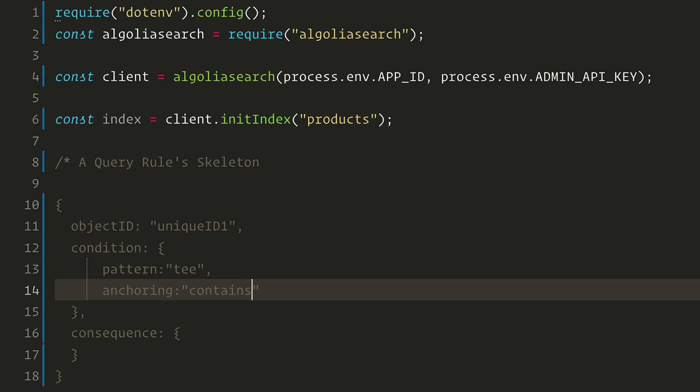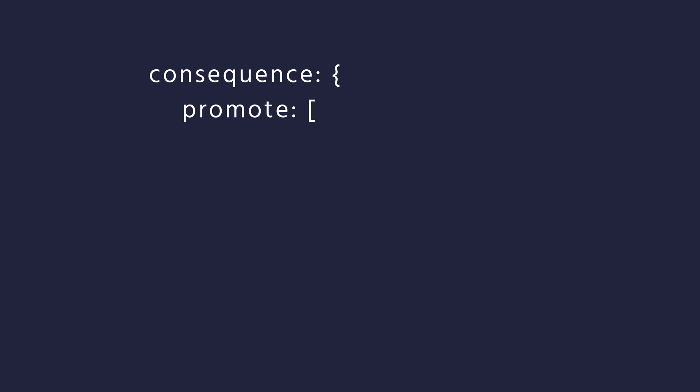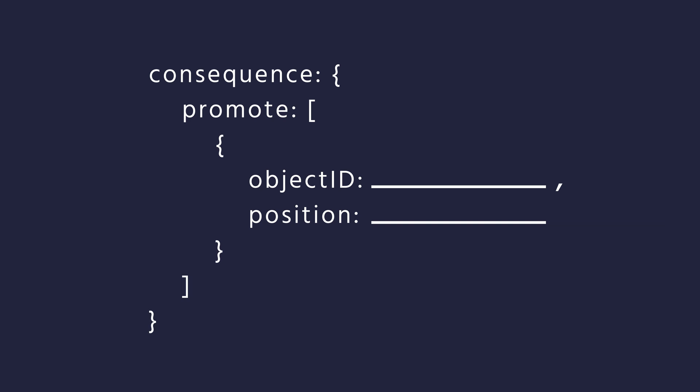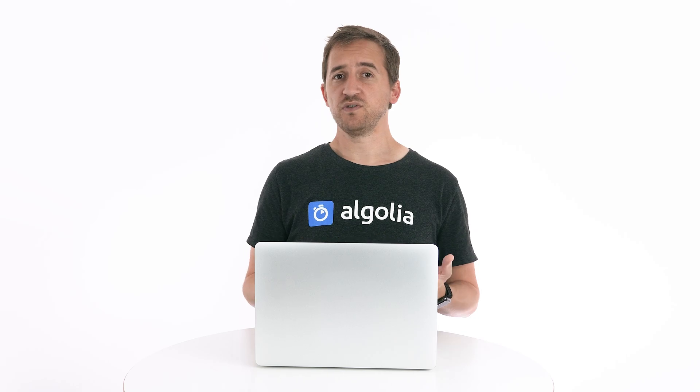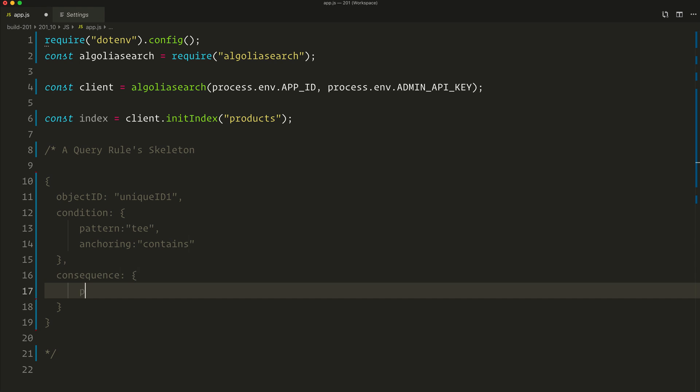So now if the search engine sees the word TEE anywhere inside the query, what should it do? This is the job of the consequence. Let's use the promote consequence. There again, we have two parameters to set: object ID and position. Those parameters make sense because we want to promote a single item identified by its object ID to a specific position in the result set. To do this, we need to grab the item from the index and tell the engine where to place it in the result.